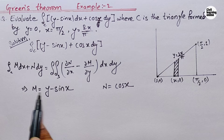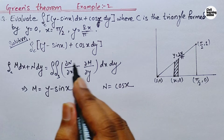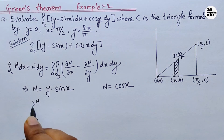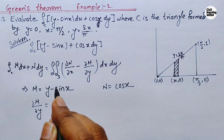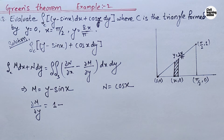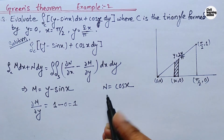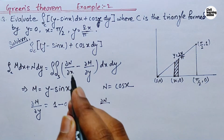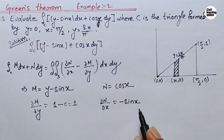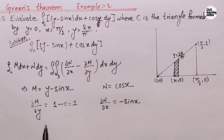Now we need to find the partial derivatives of N and M to use Green's theorem. Finding ∂M/∂y: the derivative of (y minus sin x) with respect to y gives 1, since the derivative of sin x with respect to y is 0. Similarly, ∂N/∂x: the derivative of cos x with respect to x is minus sin x.